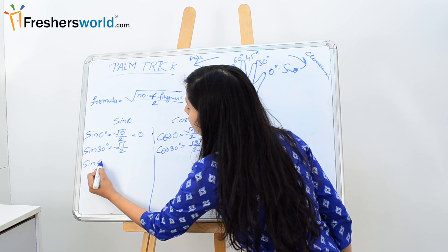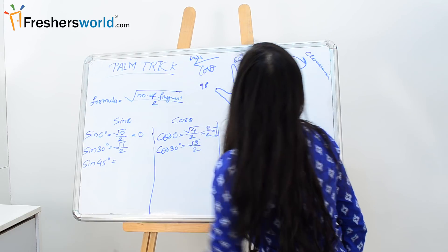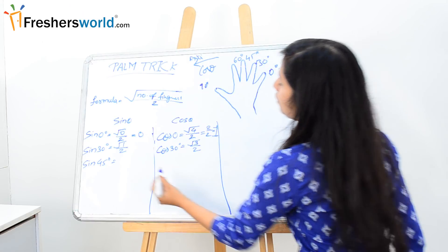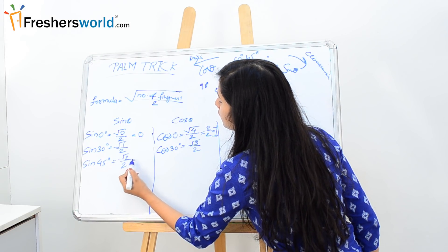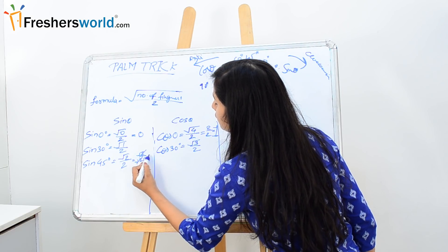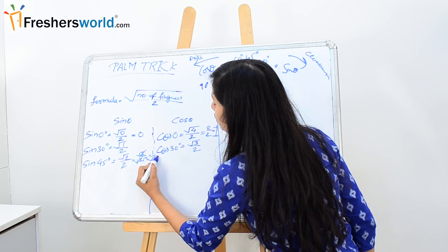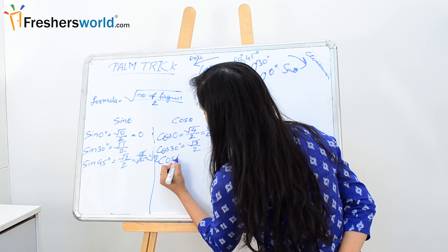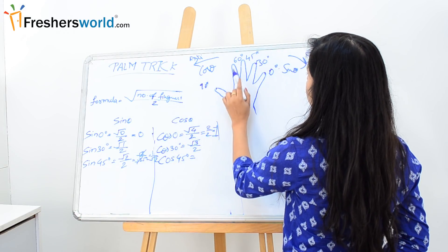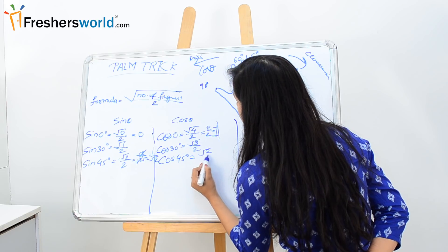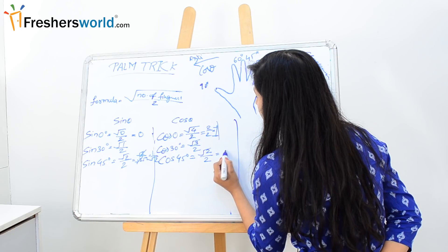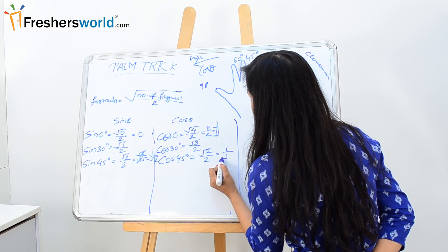Now sin 45 degree. For sin 45 degree, moving clockwise: 1, 2. Root over of 2 by 2, which simplifies — root 2 cancels — giving 1 by root 2. Now let's find out the value of cos 45 degree. Cos 45 anti-clockwise: 1, 2. Root over of 2 by 2, which is similarly 1 by root 2.